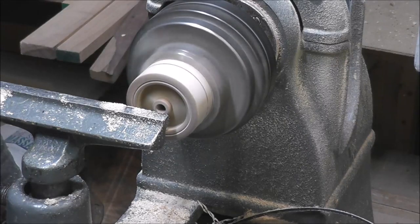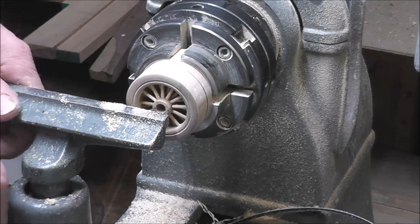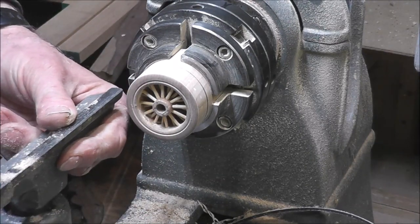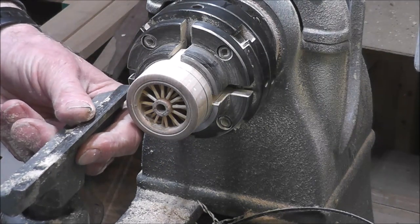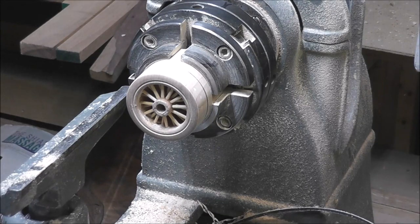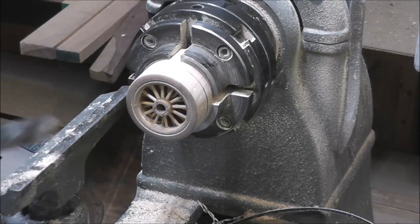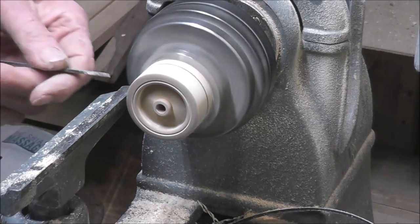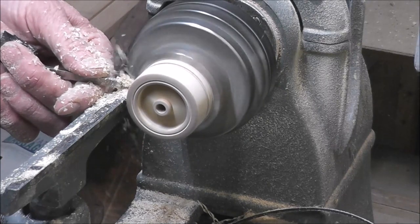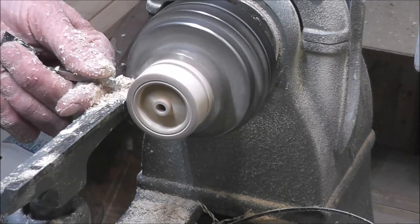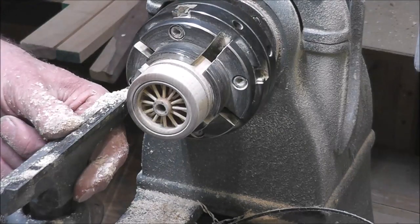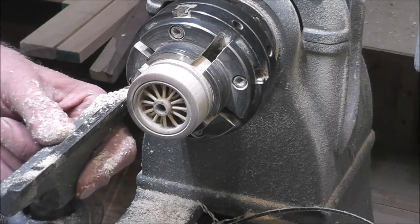And use some sort of a pointed tool to define the tire and the rim. Okay, that's all done. Now, I'm going to move this back around. And I'm going to take this little parting tool. And since I've marked that where it began, I'll just put a little cut there. This thing here started touching. There we go.